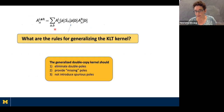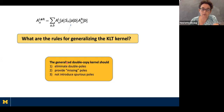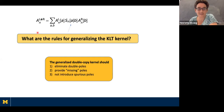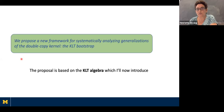This brings us to the key question: what are the rules for generalizing the KLT kernel? Modifying the kernel could be disastrous because we need the pole structures to work out correctly — we need to eliminate possible double poles, provide missing poles, and crucially, not introduce spurious poles. We want the left-hand side to be tree amplitudes in some local theory, and therefore they cannot have poles in places where tree amplitudes should not occur. The proposal is a new framework for systematically analyzing generalizations of the double copy kernel: the KLT bootstrap.